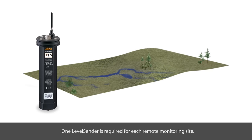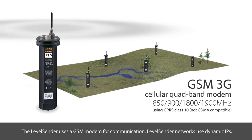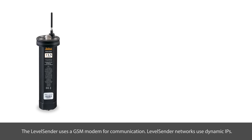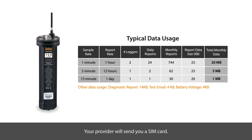One Level Sender is required for each remote monitoring site. The Level Sender uses a GSM modem for communication, and Level Sender networks use dynamic IPs. You will need to set up a cellular service plan with data usage and text messaging. The maximum expected data usage is 100 MB, including enough text messages to cover the number of reports. Your service provider will send you a SIM card for the GSM cellular network.